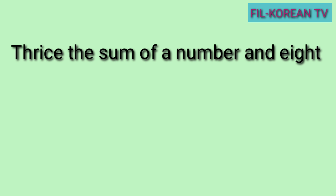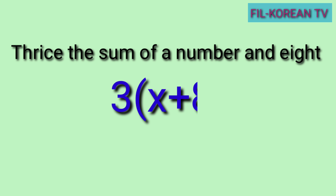Another problem: thrice the sum of a number and eight. Yung thrice, ibig sabihin yan ay times three. Yung the sum of a number and eight, ibid sabihin yung number — ito yung variable, gagamitan natin ng letter — plus eight. Isulat natin ito sa algebraic expression gamit ang variable na x: 3(x + 8). Gumamit tayo ng parenthesis kasi kukunin muna natin yung sum ng x at eight bago mag-multiply sa three. Ang parenthesis sa mathematics ay nangangahulugan din ng multiplication, kaya hindi na tayo gumamit ng multiplication sign.